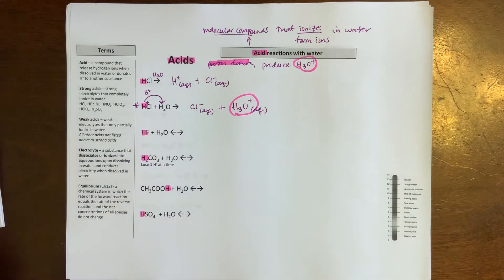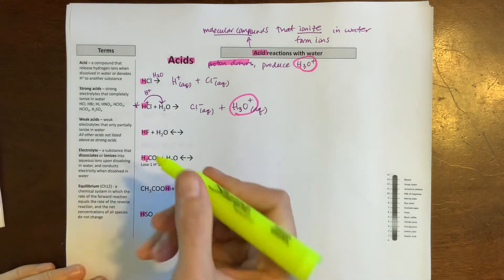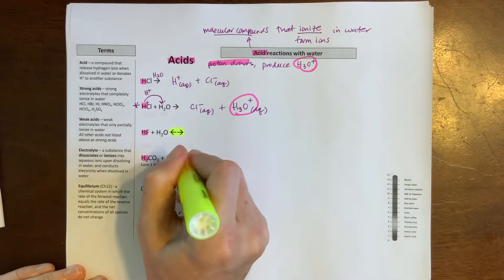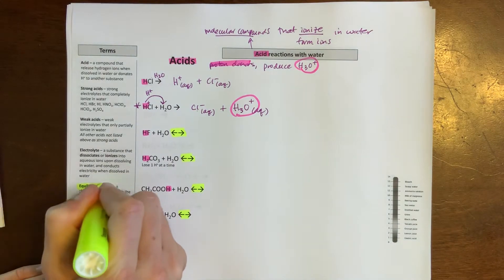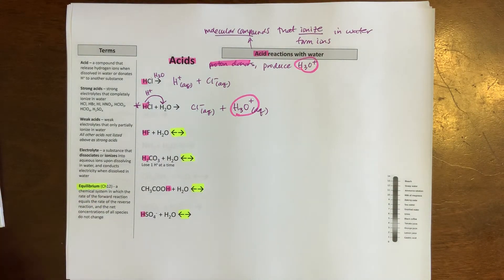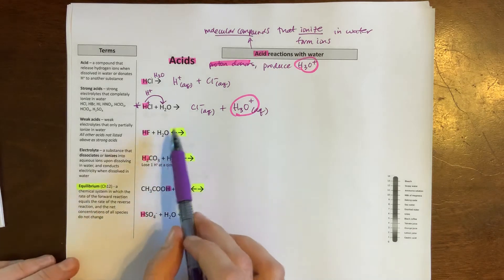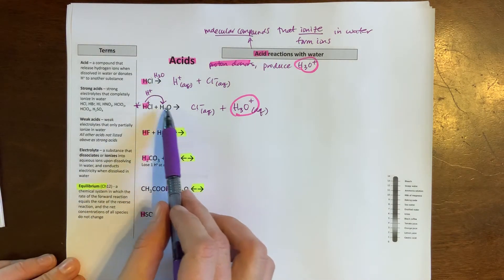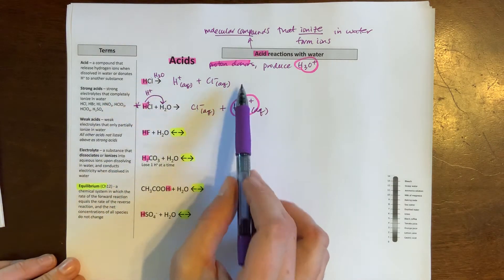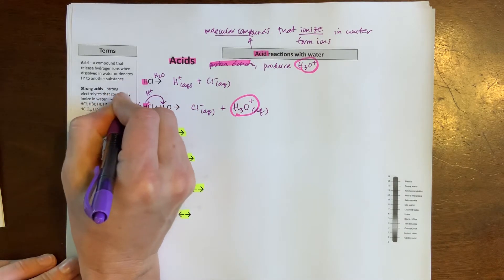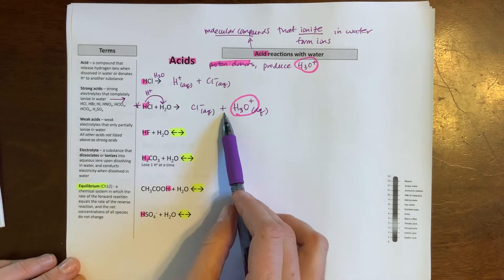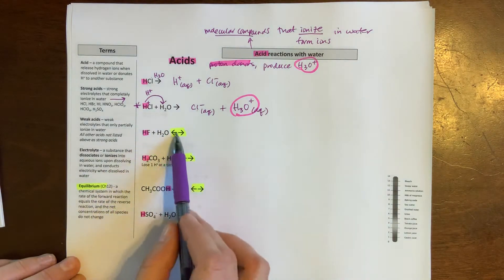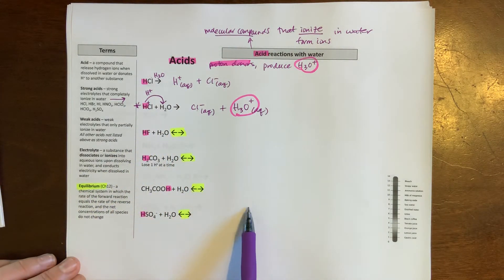I'll leave this one for you to practice, but I do want to draw your attention here to a small change that happened. Now there's some back and forth arrows, and those should remind you of equilibrium back in chapter 12. These reactions with hydrochloric acid, they only go forward, and that's going to be true of our strong acids: that they completely break apart into ions.